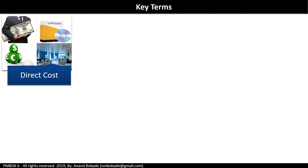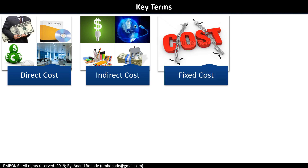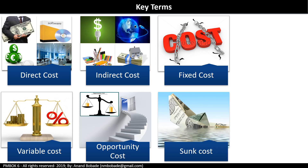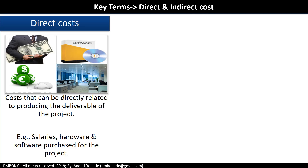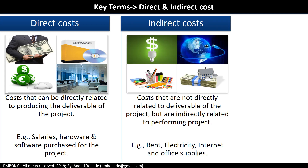Let's look at some financial terms you need to understand for the exam. Direct cost is a cost that can be directly related to producing the deliverable of the project — for example, salaries, hardware, and software purchased for the project. Indirect cost is a cost not directly related to the deliverable but indirectly related to performing project activities — for example, rent, electricity, internet, and office supplies. Some examples may fall in either category based on context — for example, rent can be a direct cost if the entire office premises is rented for a specific project.